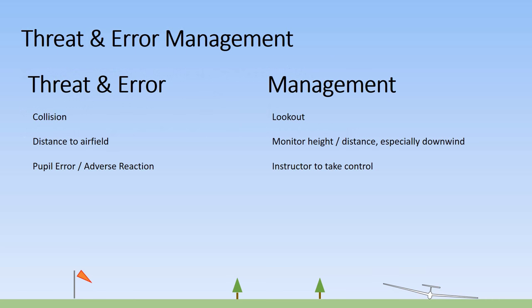This exercise has no specific threats or errors that require management, but the general risks associated with collision, distance to the airfield and pupil error or adverse reaction must be considered. These can be managed by keeping a good lookout, monitoring the height and distance relationship to the airfield, especially when downwind, and the instructor taking control if the pupil makes an error.